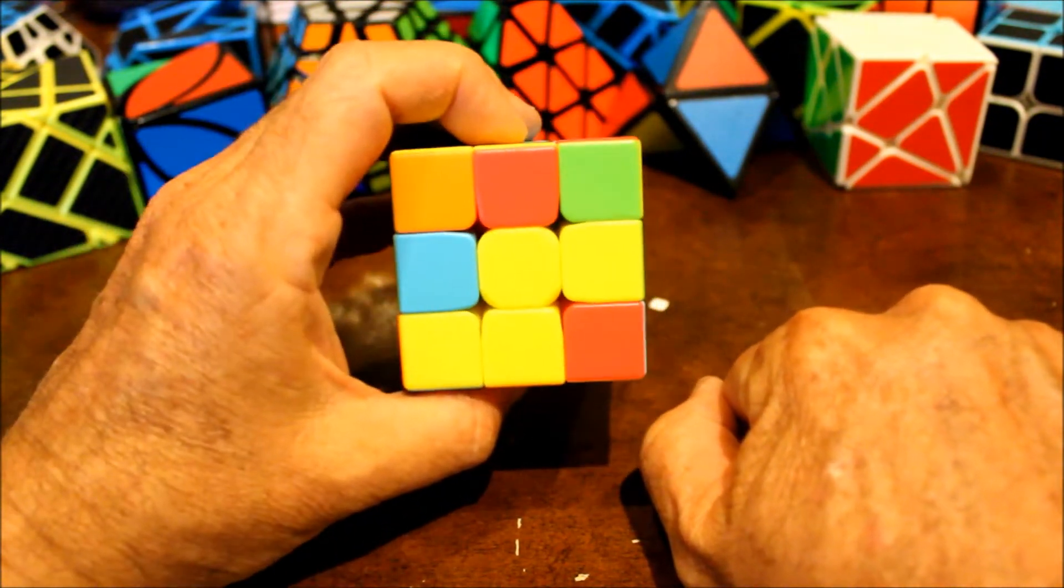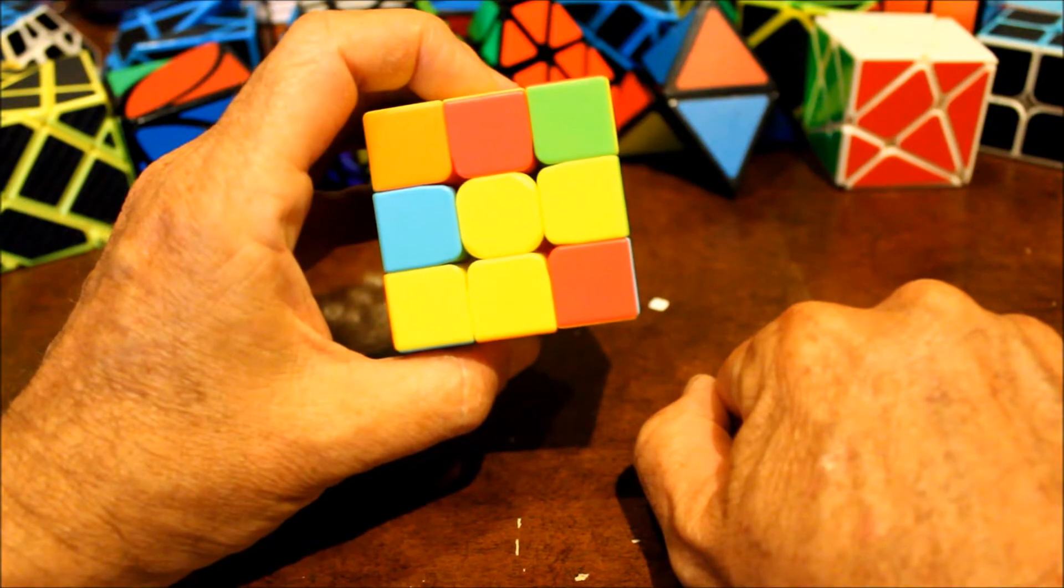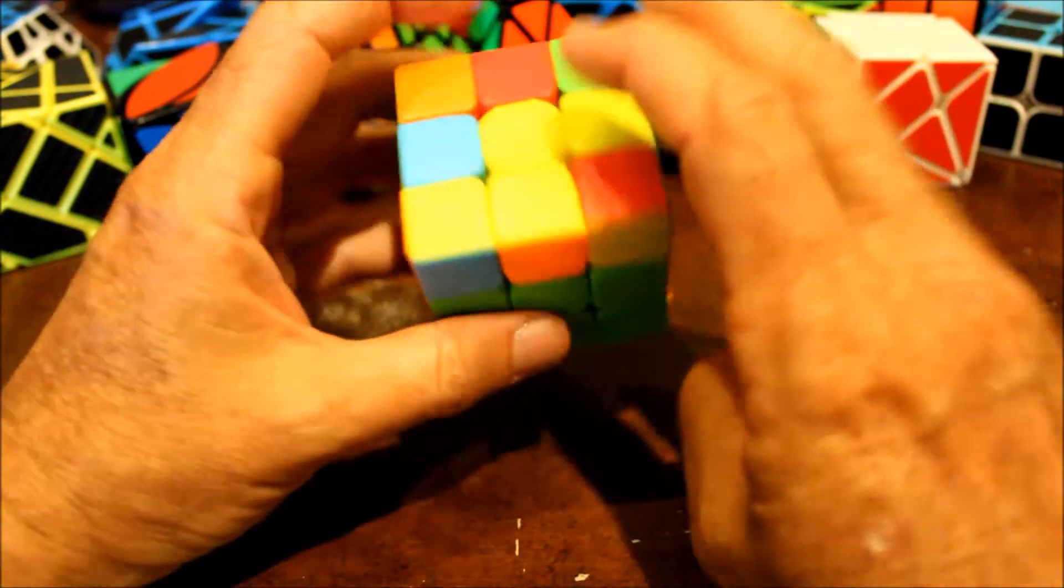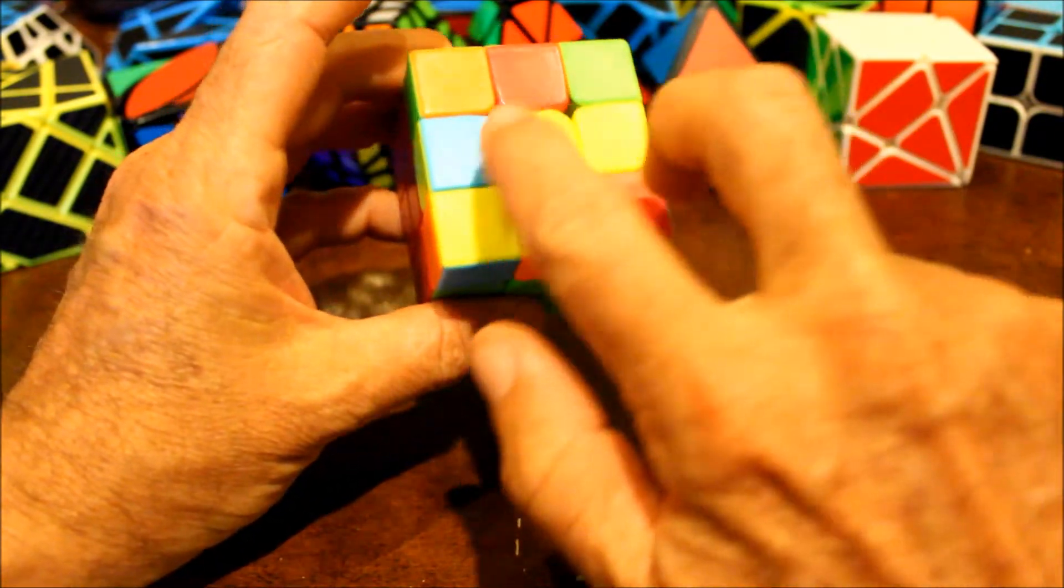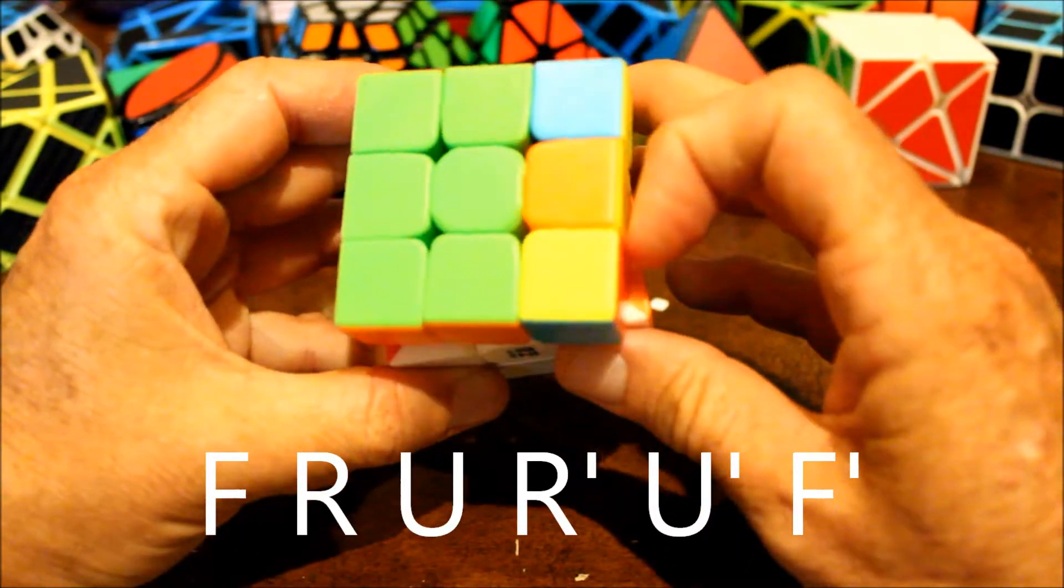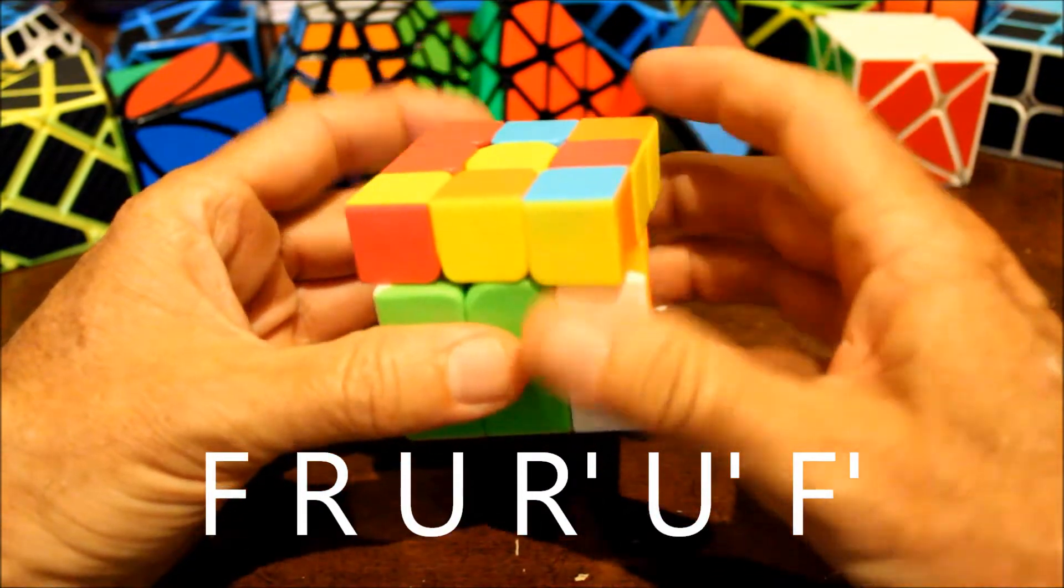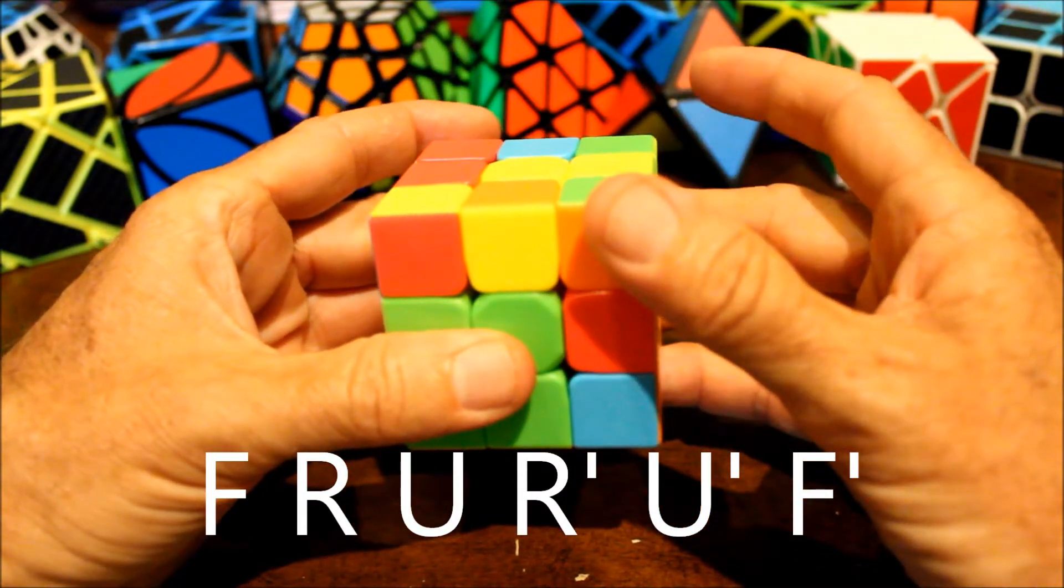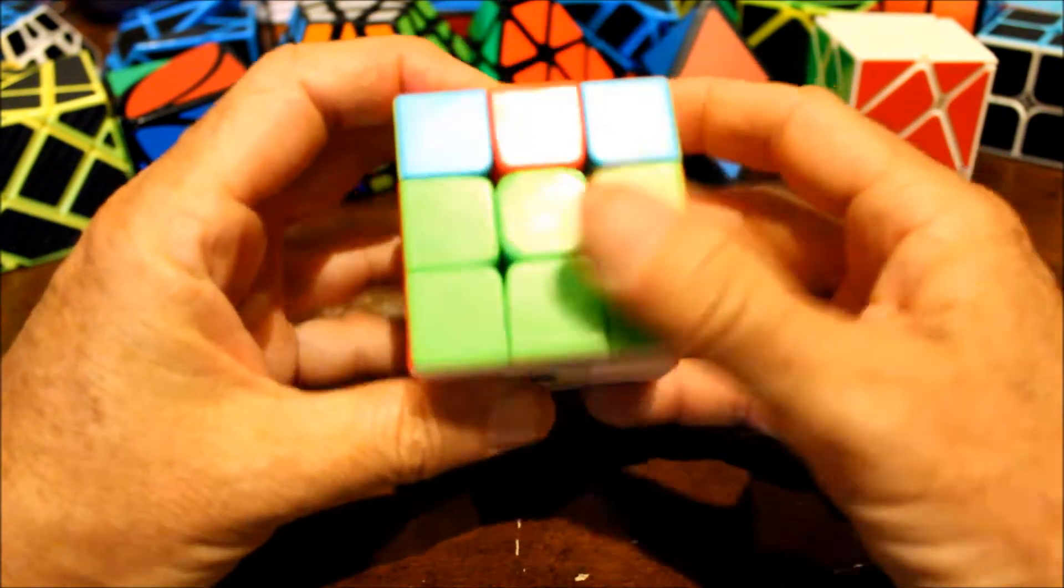If they are adjacent, or if they're across from each other like that, you would do this: Front, right, up, right prime, up prime, front prime.